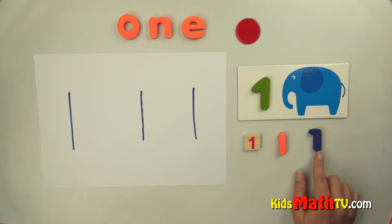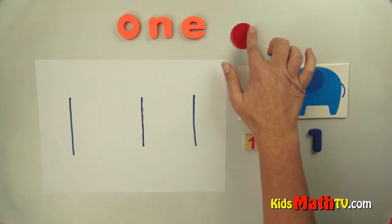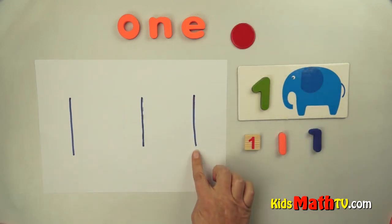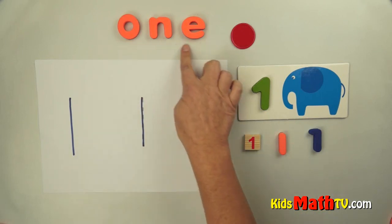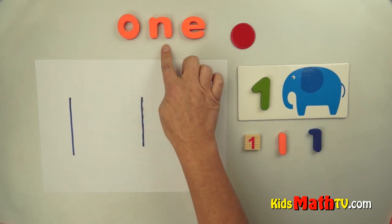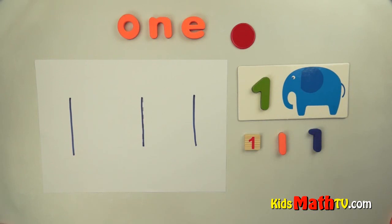Here's another one. This is still one, even though it looks a little different. So to represent one item, we use the number one. Or we can write the word one. O-N-E. And that's the end of our lesson on the number one.